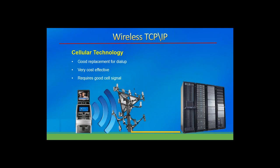Wireless — cellular — is very strong technology today. Wireless is actually faster and has more capacity than most wired solutions available today in the United States and globally. It's a great replacement for dial-up and is very cost effective. When installing an ATM, you need to get a good signal. If your wireless carrier is Verizon and you have a Verizon cell phone, it's easy to do a site survey — just look at how many bars are on your phone. If you have a very weak signal on your cell phone, your ATM will also have a very weak signal.